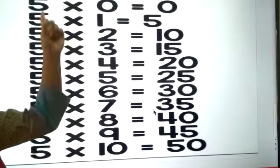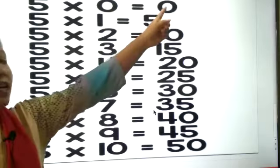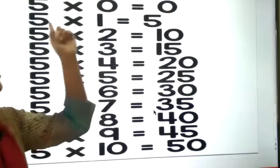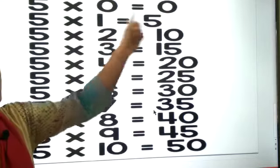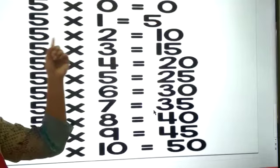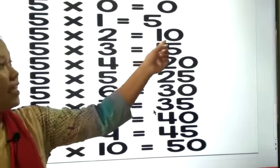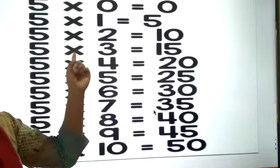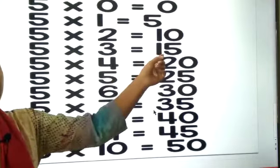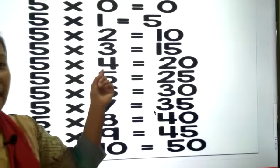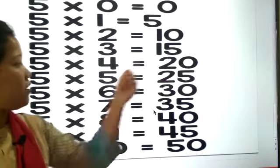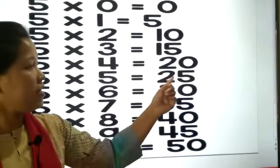Again learn with me. 5 0s are 50... 5 5s are 50... 5 5s are 25.